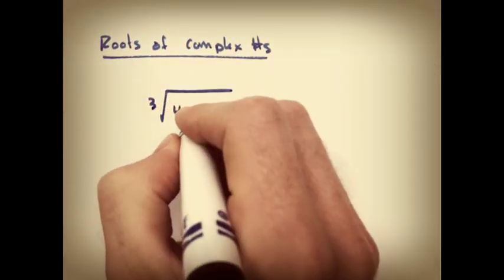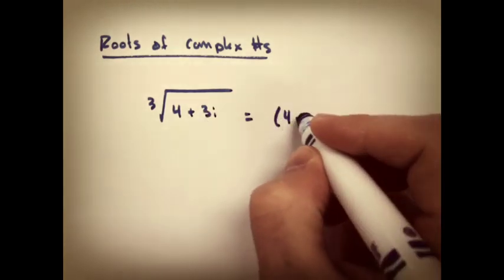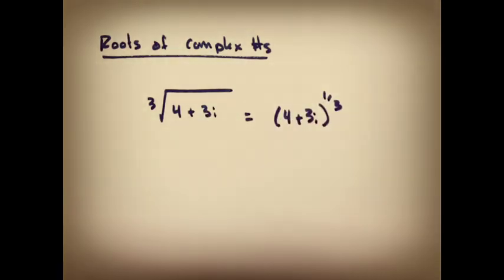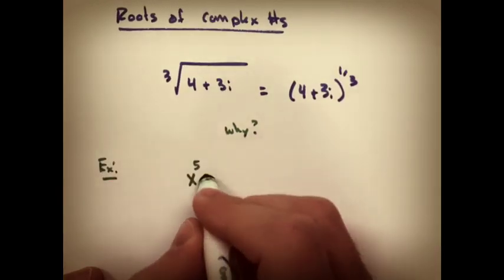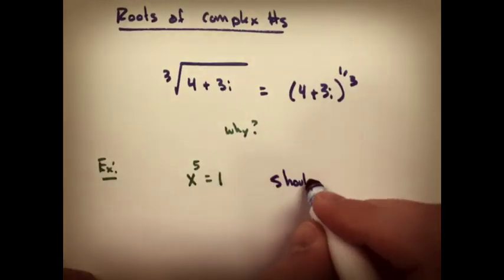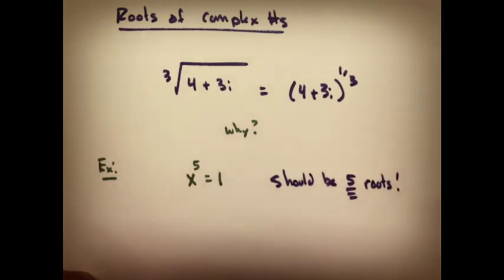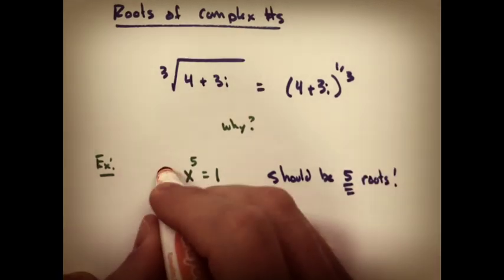The second half of this section talks about roots of complex numbers. If I had 4 plus 3i, and I wanted the third root of it, I could write it like that. Why would we want to do such a thing? Let's pretend we had an equation, say x to the fifth equals 1. We know from earlier in the year that there should be five solutions, five roots.